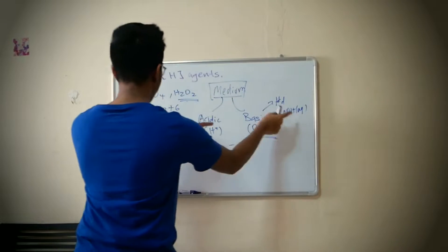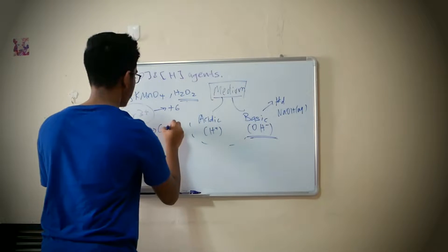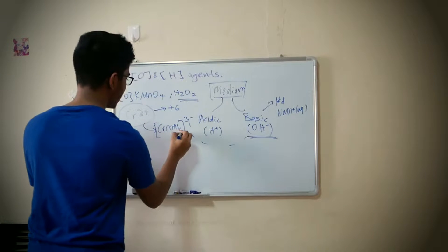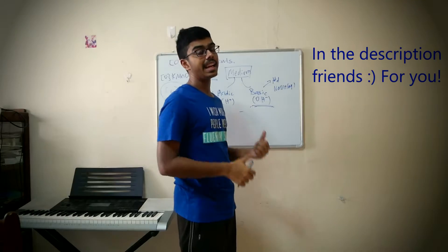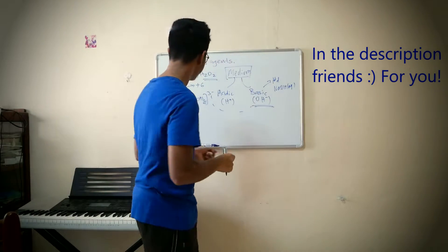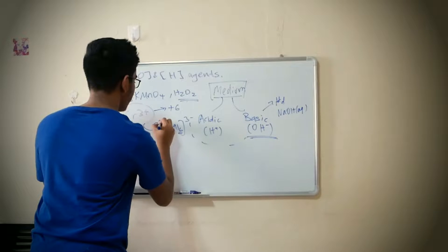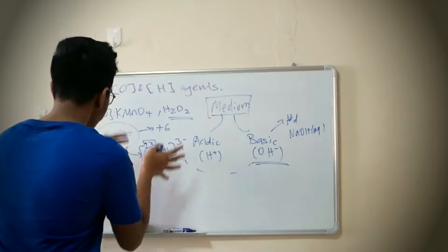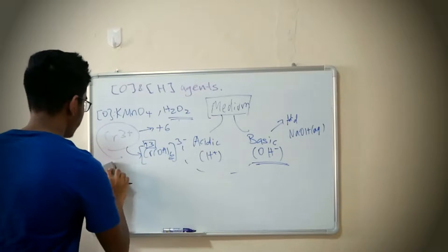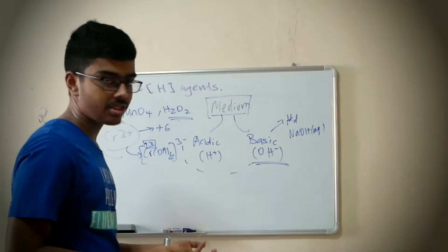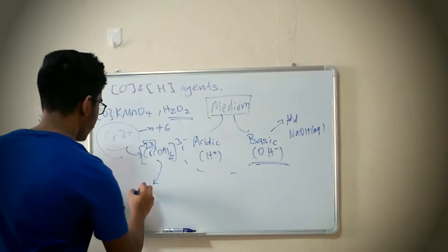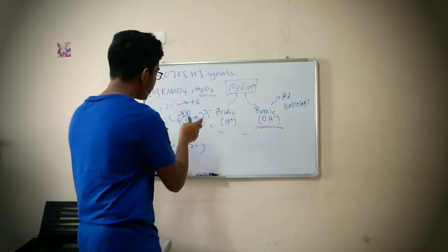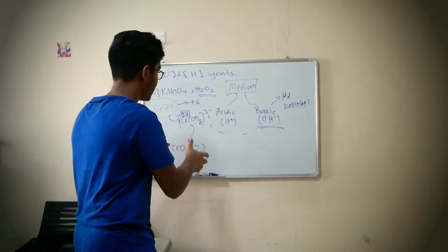When you add NaOH to this in excess, you will form CrO4 3-. How do I figure out this formula? Do look at the second part of the video that I made right before this one. Chromium 3+, you know that transition metals have variable oxidation states. And for this one, it can go all the way to plus 6.